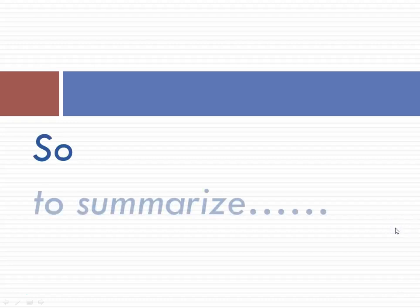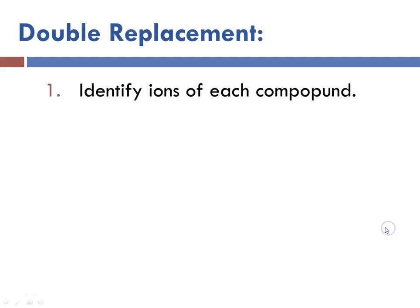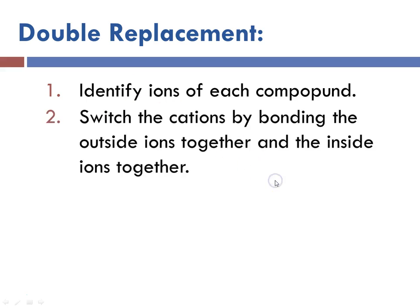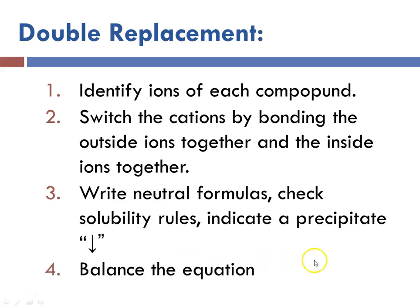To summarize, for a double replacement you always first identify the ions for each compound. Second, switch the cations by bonding the outsides together and the insides together. Write neutral formulas, check the solubility rules for a precipitate or molecular compound, and then balance the equation. I hope this helped — I'll be recording more videos for you. This is Ms. Augustine signing off.